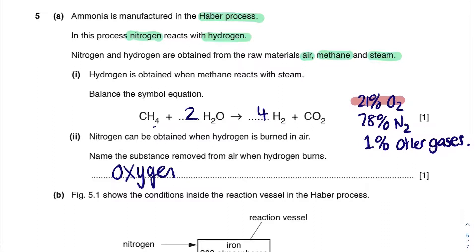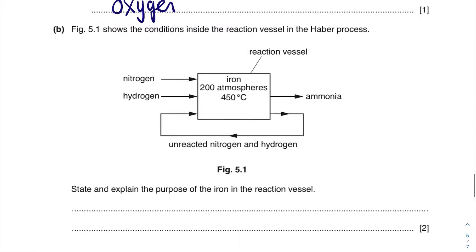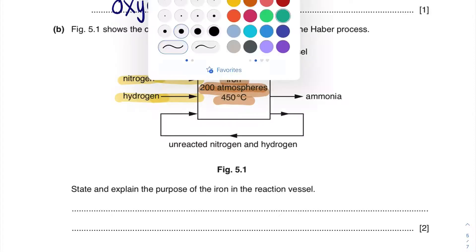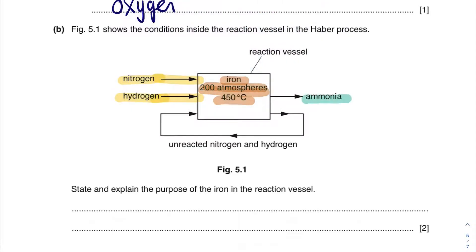We then use a scrubber in the Haber process to remove the 1% other gases. This shows the conditions inside the reaction vessel in the Haber process. The nitrogen goes in here and the hydrogen goes in here — they both go in. In here we have iron as a catalyst, 200 atmospheres and 450 degrees C. We can see that the ammonia comes out the other side, and along here any unreacted hydrogen and nitrogen is recycled back again.